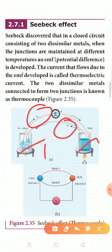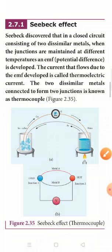You connect two junctions — water to ice cube and ice cube to water. The hot water junction connects to iron and the ice cube junction connects through a copper wire to a galvanometer. When you do this, a potential difference is created and the galvanometer deflects.